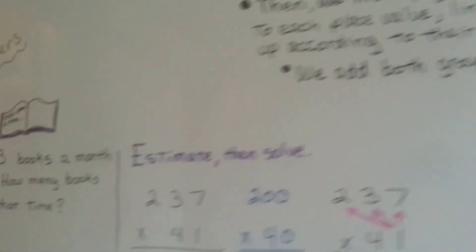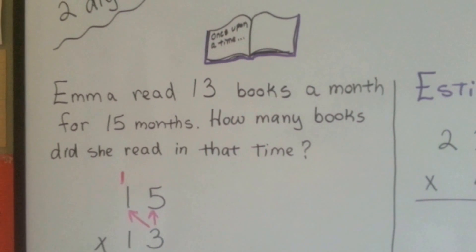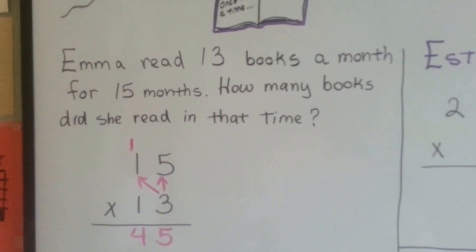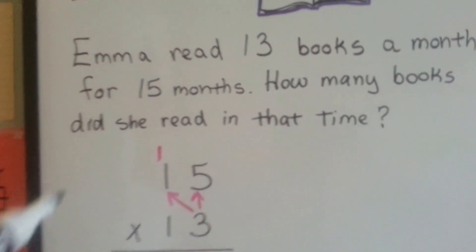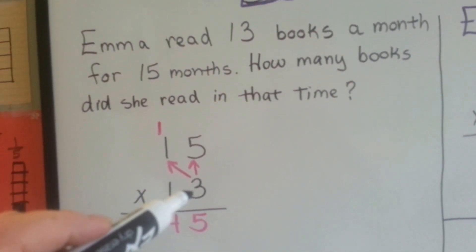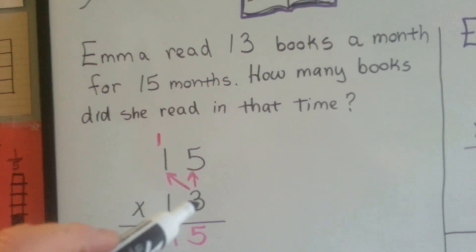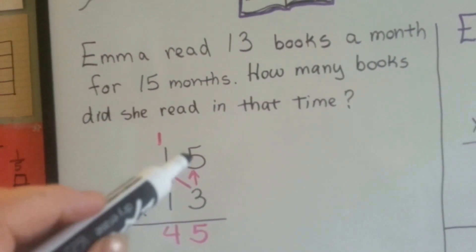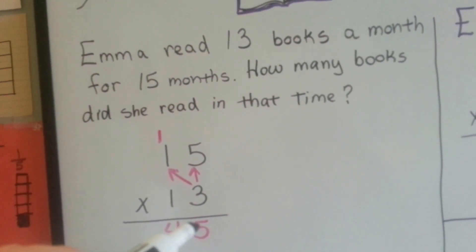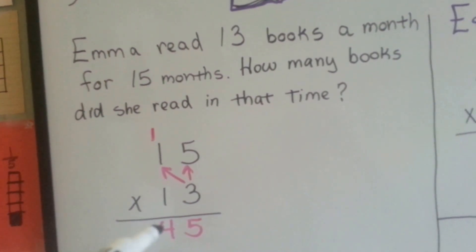Alright, so let's see what we've got here. Emma read 13 books a month for 15 months. How many books did she read in that time? So we're going to do 15 times 13. We do, as if we were multiplying a one-digit: we do 3 times 5 and then 3 times 1. 3 times 5 is 15. We carry the 1 over here to regroup and put the 5 down. And then 3 times 1 is 3, plus 1 is 4.